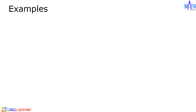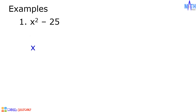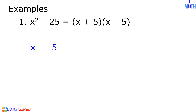Let us answer more examples. Example number 1: Let us factor x squared minus 25. Square root of x squared is equal to x. Square root of 25 is equal to 5. Then we have x plus 5 times x minus 5.